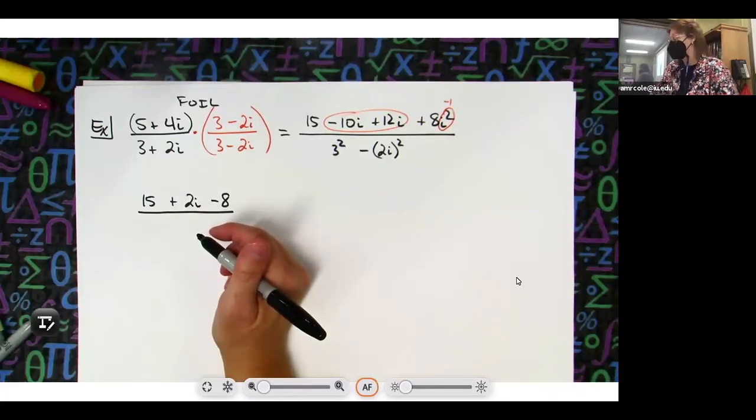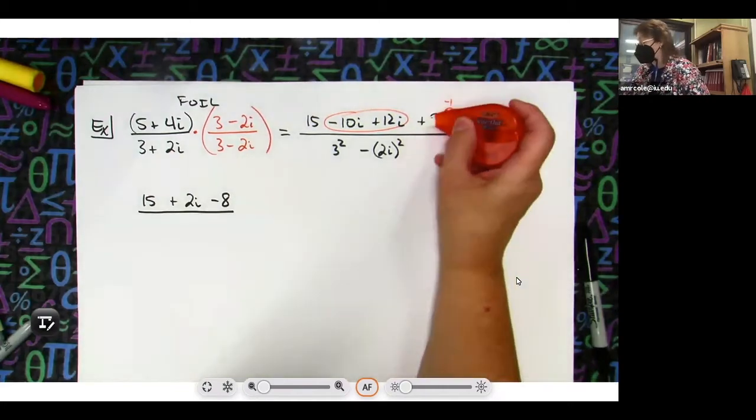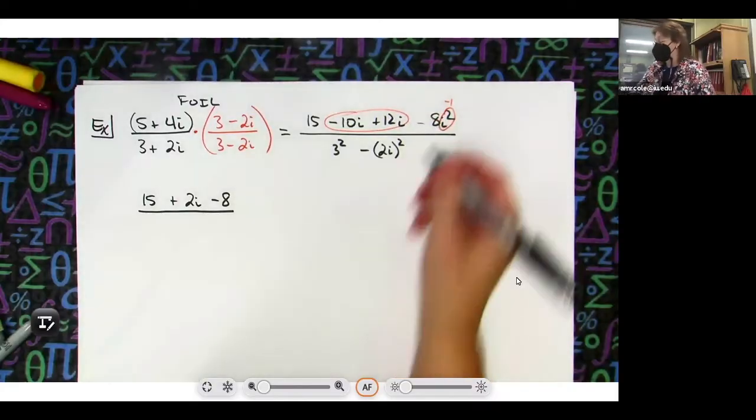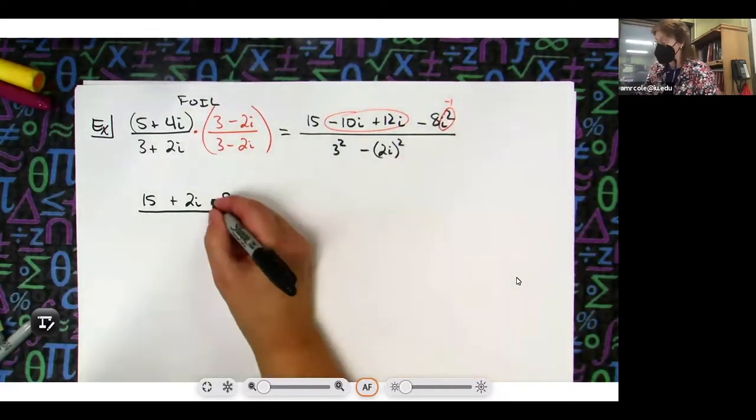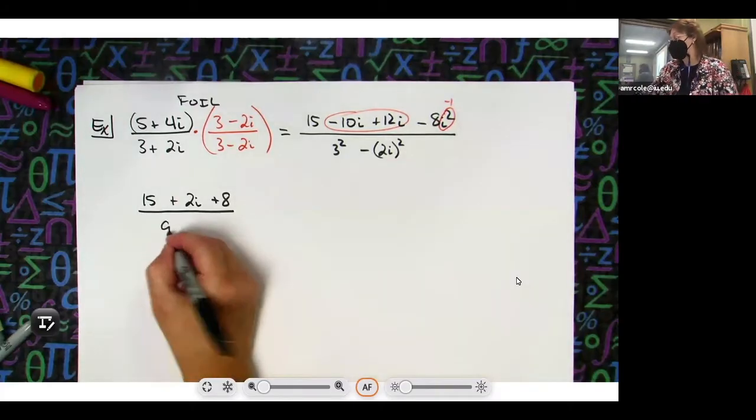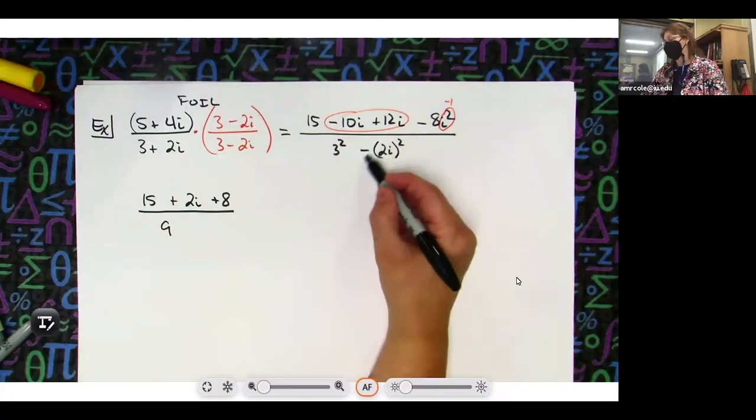There's my mistake, this isn't working out. Thank you very much for catching that. Now 3 squared is going to be a 9, this right here is 4 and the negative turns this to a plus.